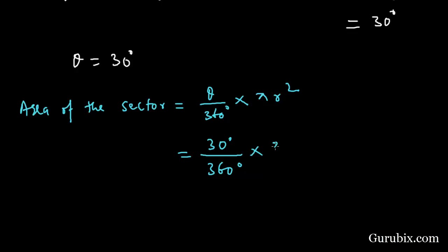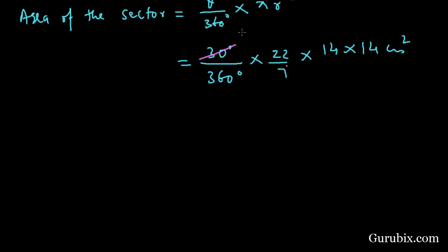Pi is 22 over 7, and r is 14, so we shall multiply 14 with 14 centimeter squared.